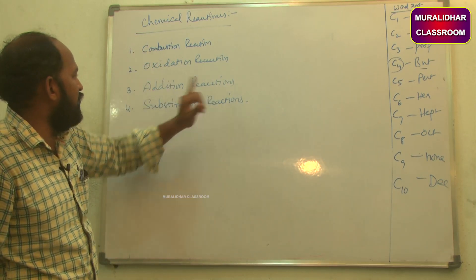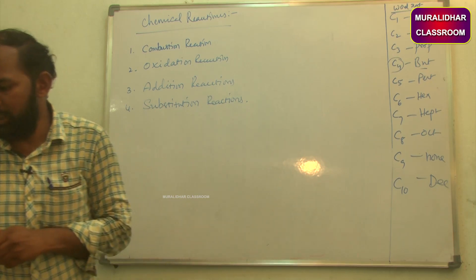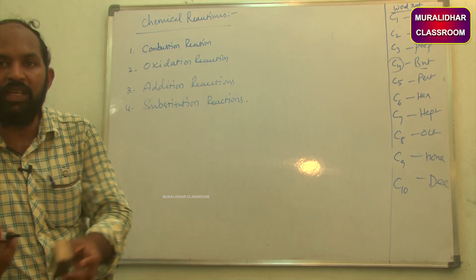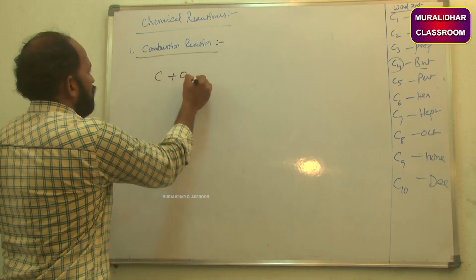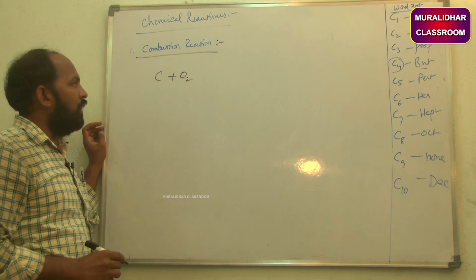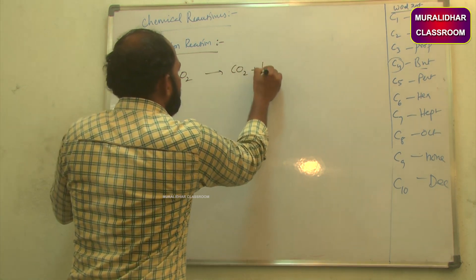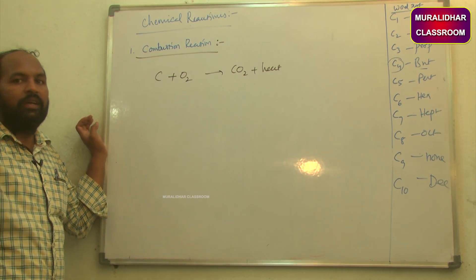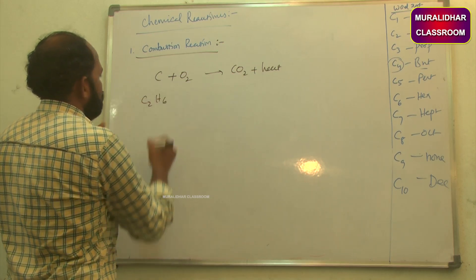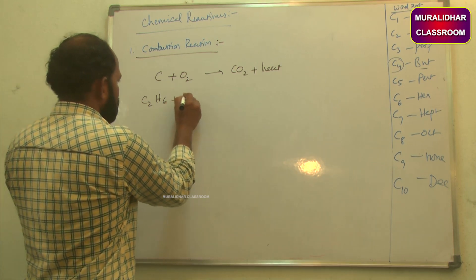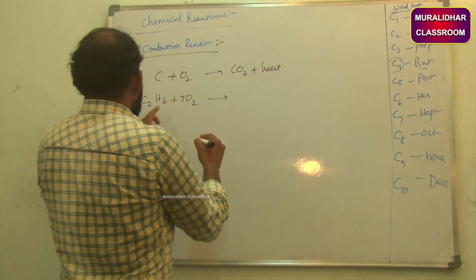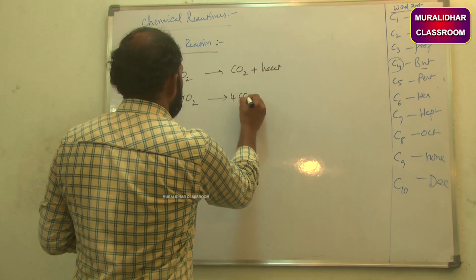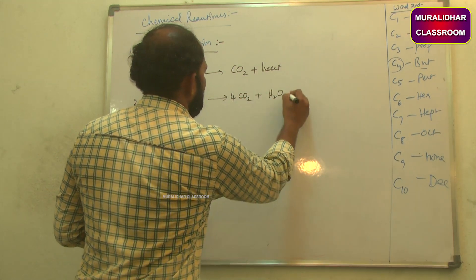First, combustion reaction — an organic compound reacts with oxygen to give carbon dioxide, water, and heat. This is called combustion reaction. For example, C2H6 (ethane) undergoes combustion with seven moles of oxygen: 2C2H6 + 7O2 gives 4 moles of CO2 plus H2O plus heat plus light.